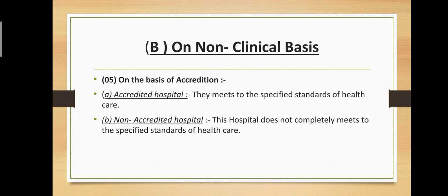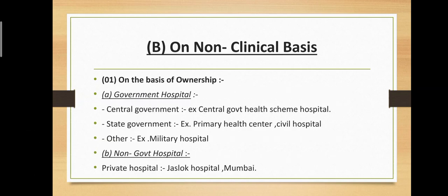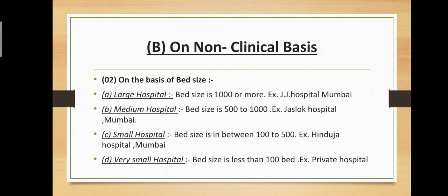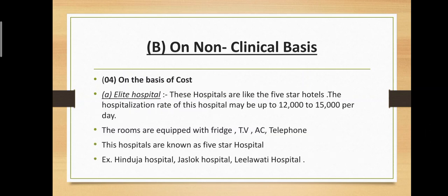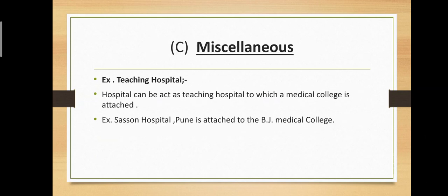The fifth subtype under non-clinical basis is on the basis of accreditation: A) accredited hospital — hospitals that meet the specified standards of health care; and B) non-accredited hospital — hospitals that do not completely meet the specified standards of health care. To recap the non-clinical basis subtypes: ownership, bed size, length of stay, cost, and accreditation.